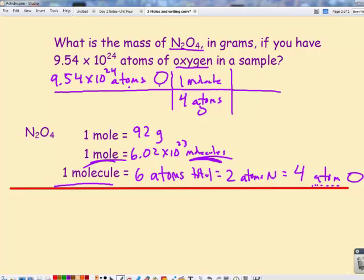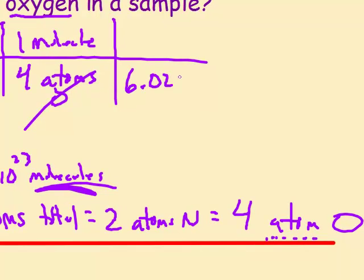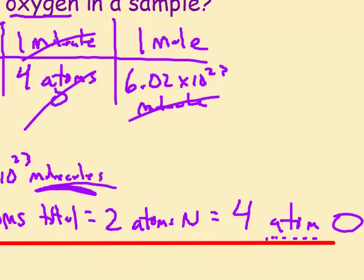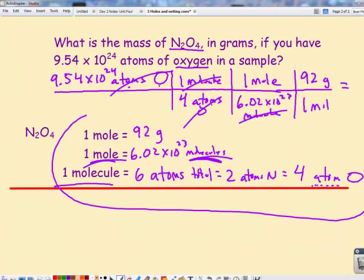This is as easy as it gets with dimensional analysis. I've canceled atoms of O. I have molecules on top, so I want to put 6.02 times ten to the twenty-third molecules on the bottom so that molecules cancel, and that is equal to one mole. Now I've changed it to moles. So I changed it from atoms to molecules, molecules to moles, and then mass is always grams. So now my last conversion that I created was one mole equals 92 grams. If I gave you these conversion factors and this question on the first test of the year, you would have been able to do it because you know how to assemble to cancel.